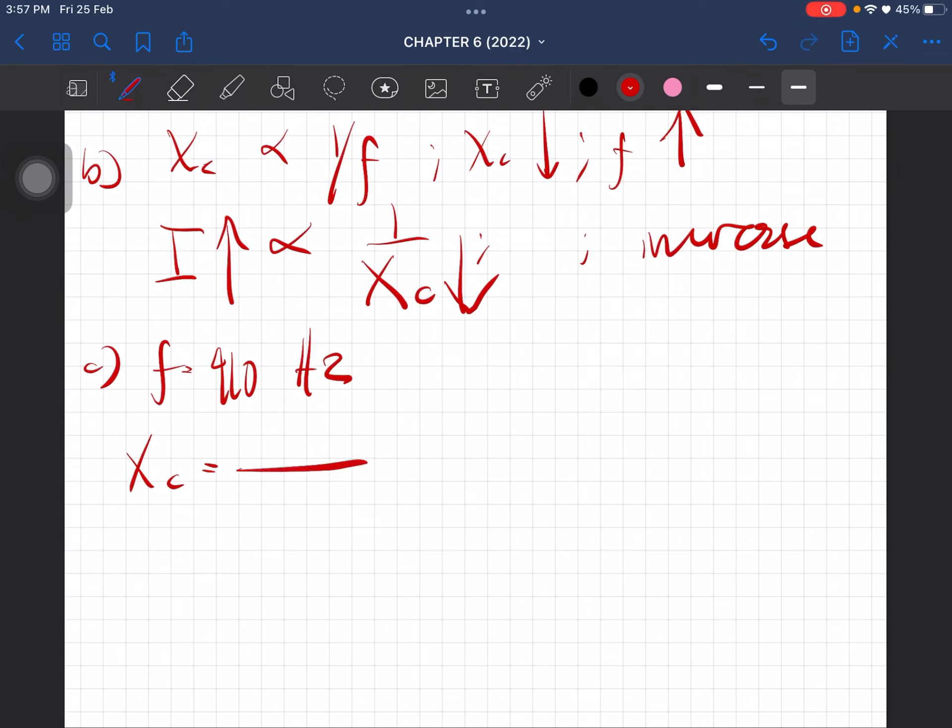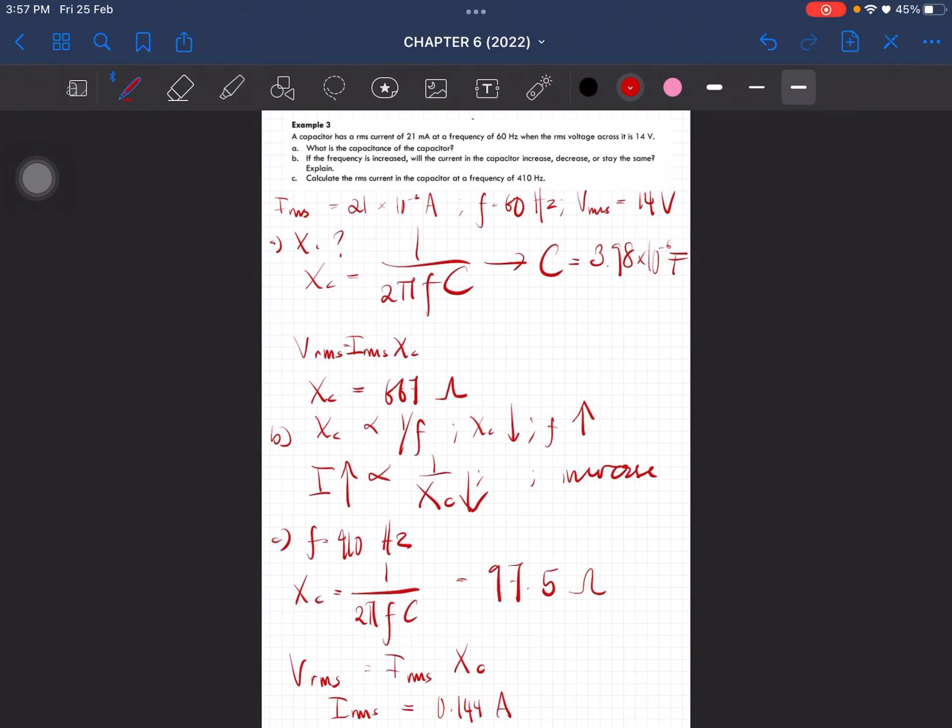The frequency is different now. We're gonna use this equation. You'll get 97.5 ohm. And you will use this equation to calculate the new RMS current. You'll get 0.144 ampere as the RMS current.